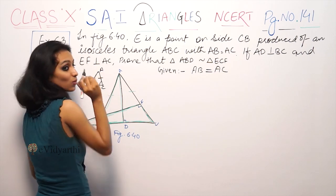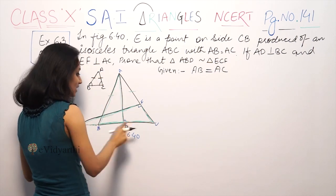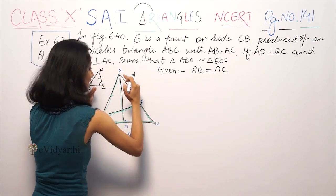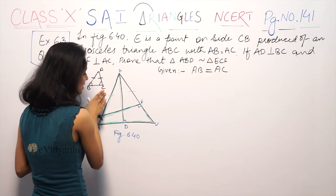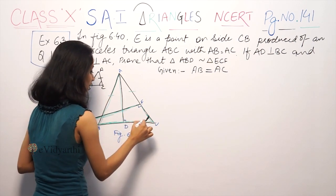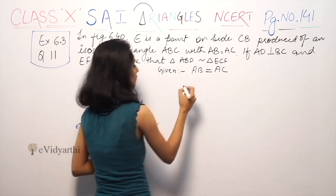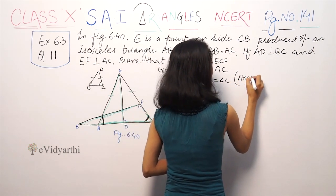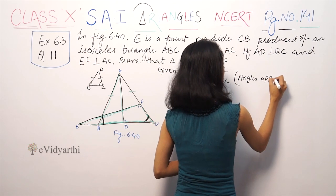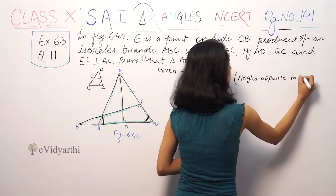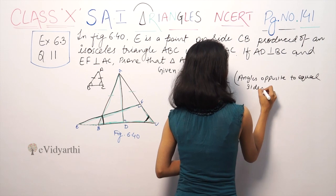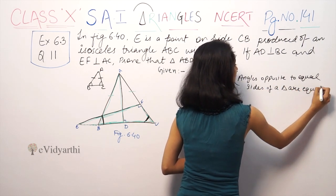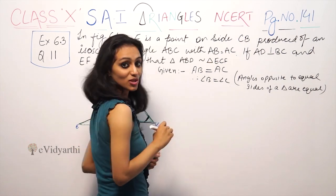So the opposite angles are equal. In triangle ABC, angle B equals angle C. Because these two sides are equal, the opposite angle is B and the opposite angle is C. Therefore angle B equals angle C. Angles opposite to equal sides of a triangle are equal.